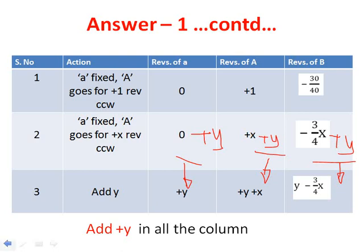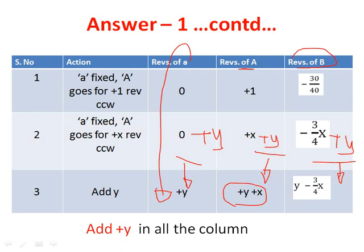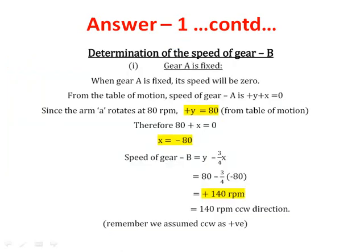At the end of the table of motion: speed of arm small a is plus Y, speed of gear A is Y plus X, and speed of gear B is Y minus 3 by 4 X. These are the speed expressions for all three elements.